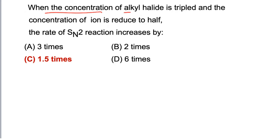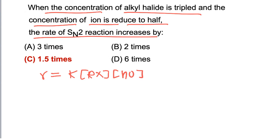When the concentration of alkyl halide is tripled and the concentration of nucleophile is reduced to half, the rate of SN2 reaction increases by how much? For SN2 reactions, the rate depends on concentration of both alkyl halide and nucleophile—first order with respect to alkyl halide and first order with respect to nucleophile.